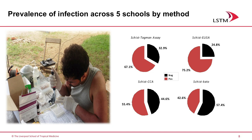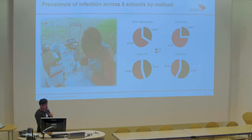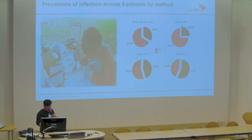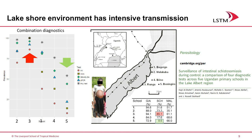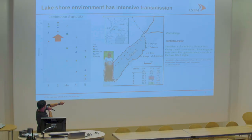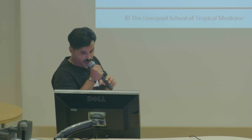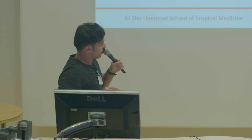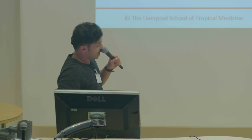Across five primary schools overall, Kato-Katz gives the lowest prevalence at 42%, CCA gives higher than Kato-Katz, and TaqMan gives around 67%. ELISA may be over 75%. When you rank schools by increasing distance from the shoreline and plot all diagnostics together, in Runga school — the highest prevalence site — Kato-Katz gives around 85% and all diagnostics are also highest. But further away from the shoreline, in low transmission settings, Kato-Katz is around 80.6% while DNA is around 25%.